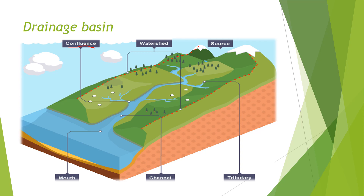Confluence is the point at which two rivers or streams join. As you can see, there are rivers joining right here.